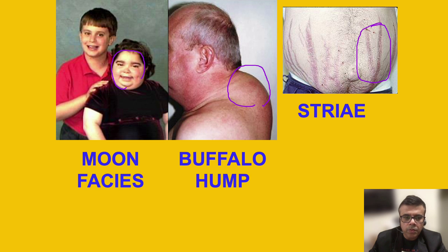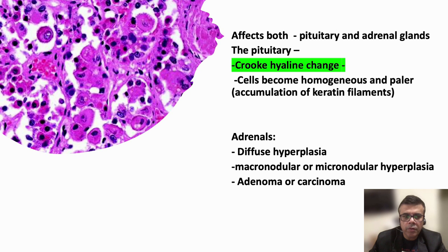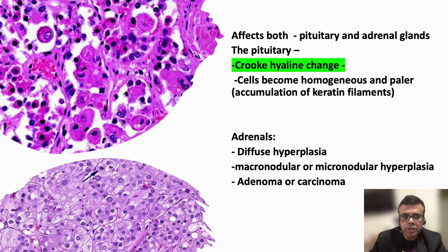Regarding morphological changes, when pituitary adenoma is the cause of Cushing syndrome, the affected corticotroph cells will be enlarged. Rather than the normal darker basophilic appearance, they will be more homogeneous and eosinophilic with a paler color, due to accumulation of intermediate keratin filaments. This is known as Crooke's hyaline change.